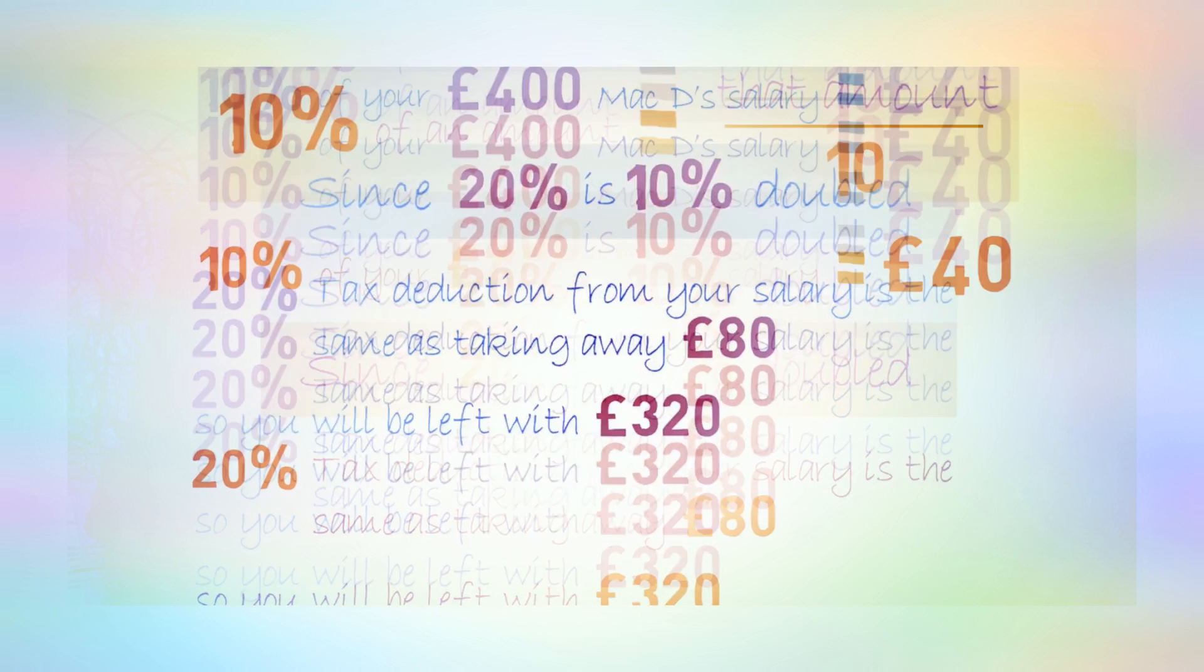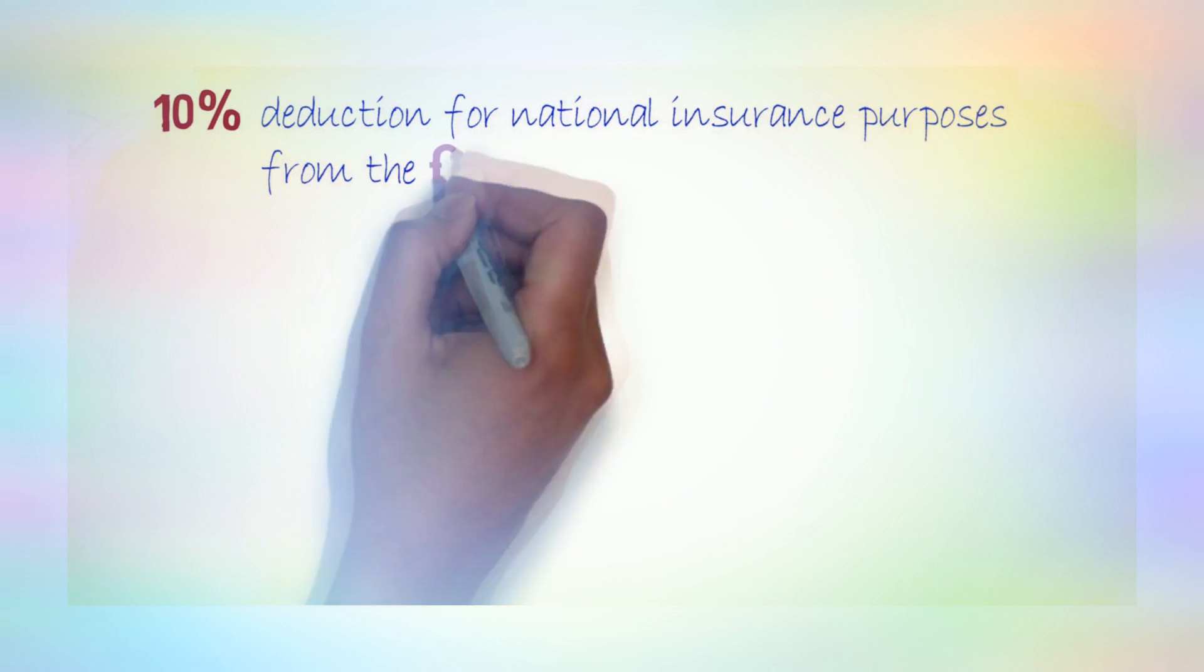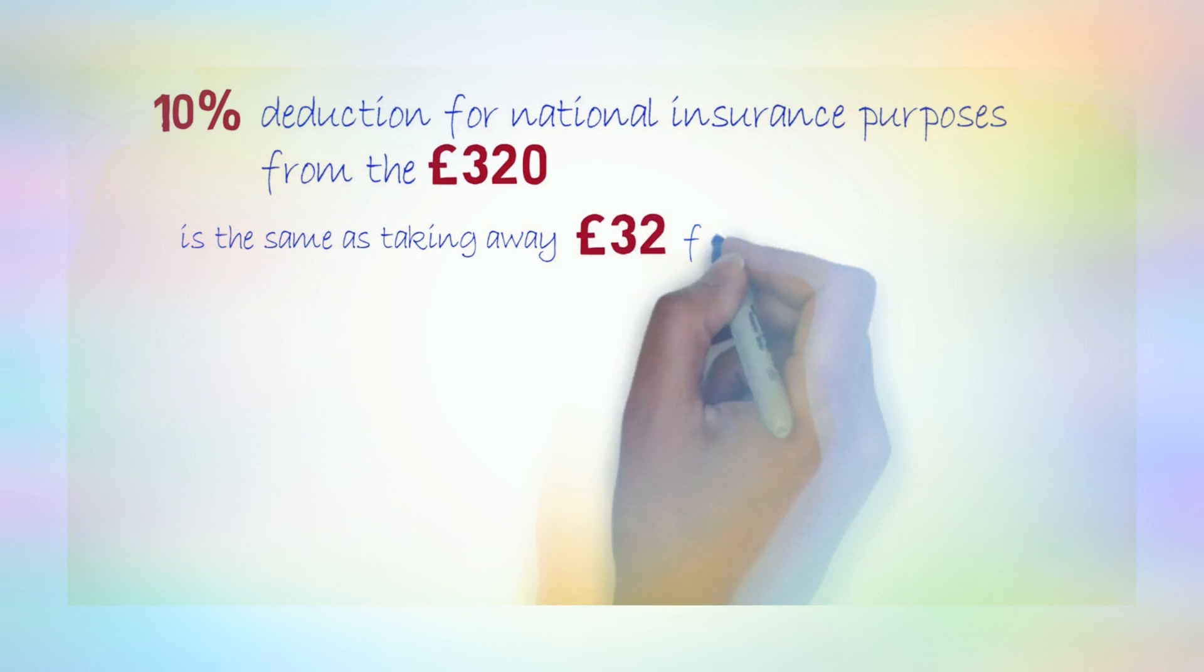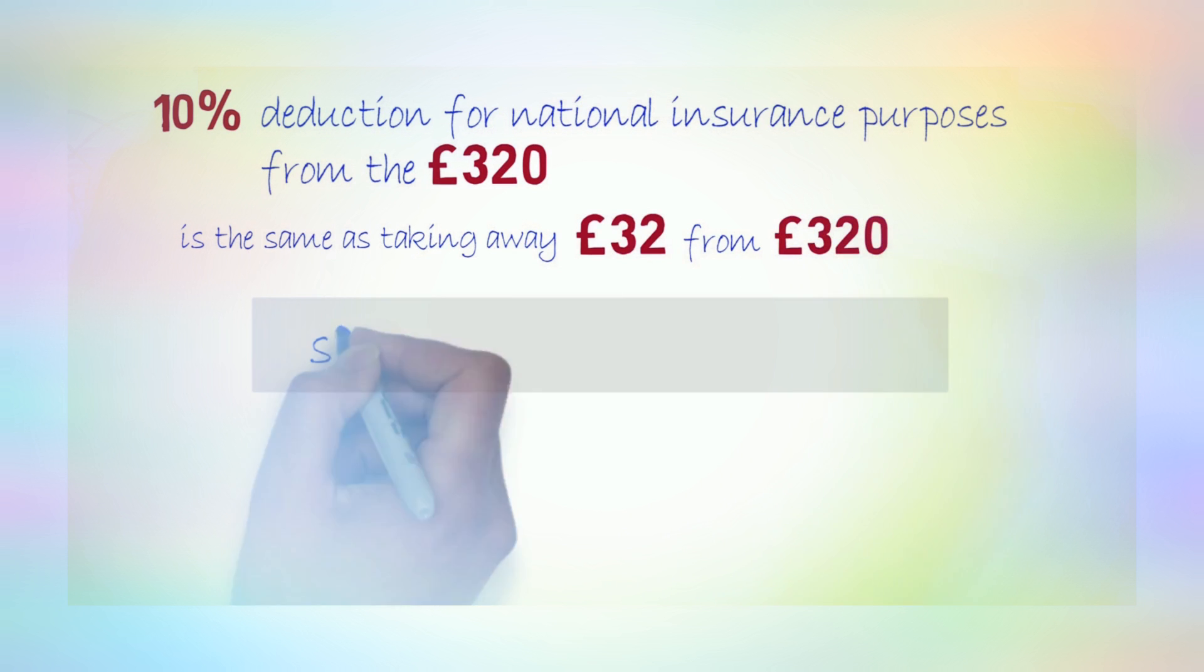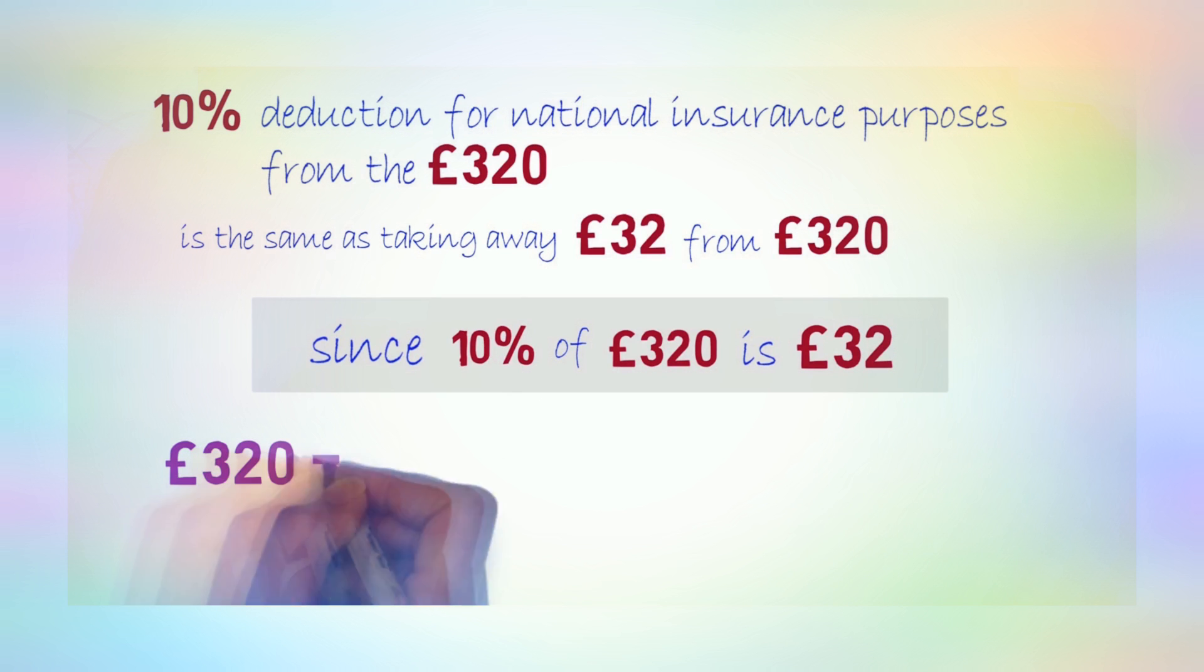Oh, OK, I get it now. So a further 10% deduction for national insurance purposes from the £320 I had left after tax is the same as taking away £32 from £320. Since 10% of £320 is £32, I need to take away £32 from £320.